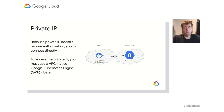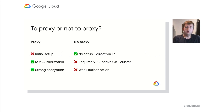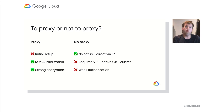Because private IP doesn't require any authorization, it's possible to just connect directly — you can put the private IP into your application and connect directly to your Cloud SQL instance. In order to access that private IP, you have to be on a VPC-native Google Kubernetes Engine cluster, which means this requires a GKE cluster. If you're using a cluster off GCP, you won't be able to connect. While direct private IP is easy to use, with the proxy you get strong IAM authentication and strong encryption for all the data from your application, though the initial setup is a bit of a hassle.